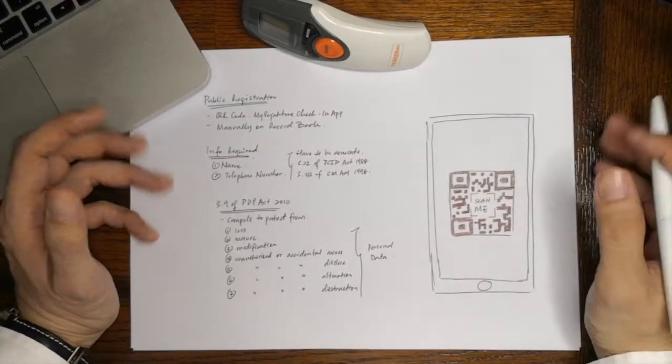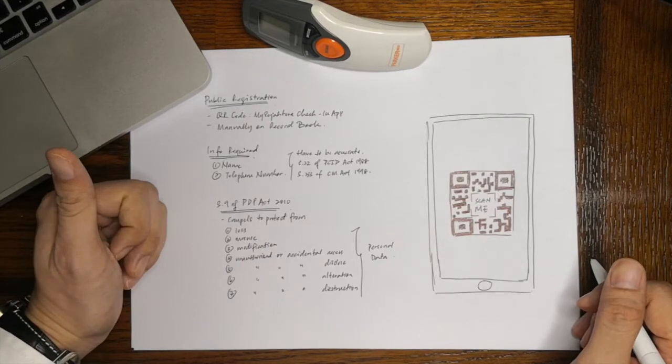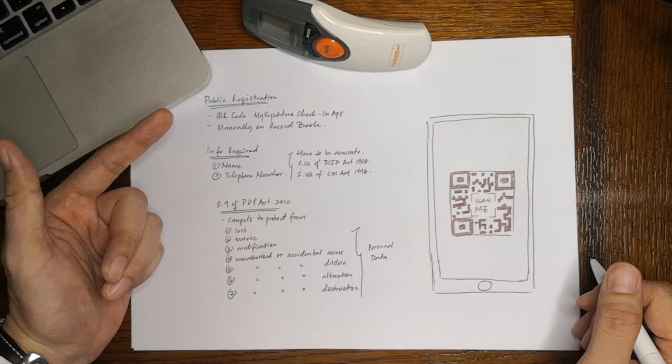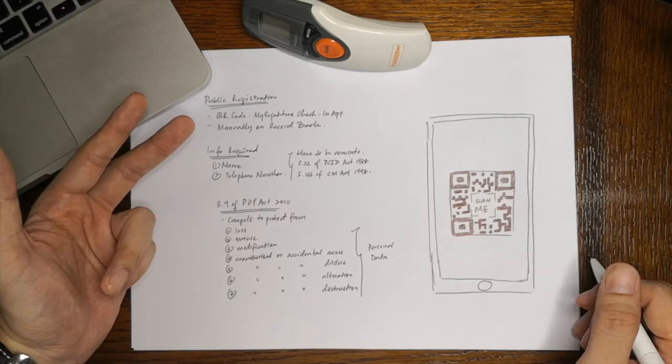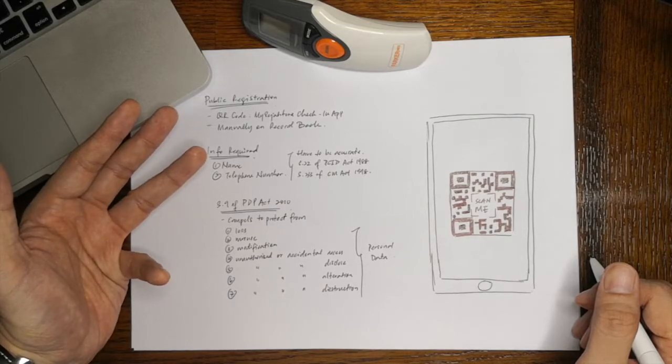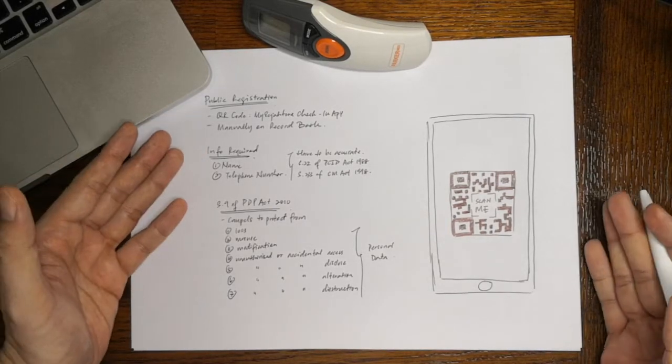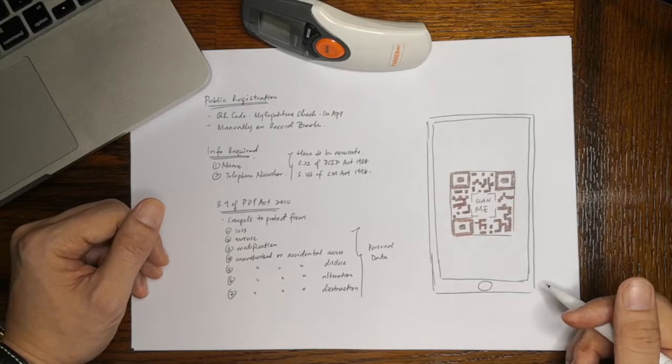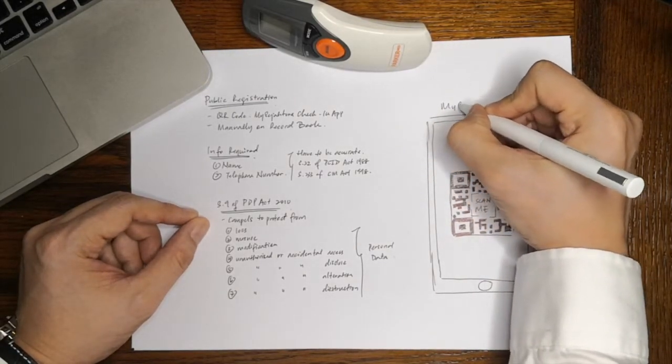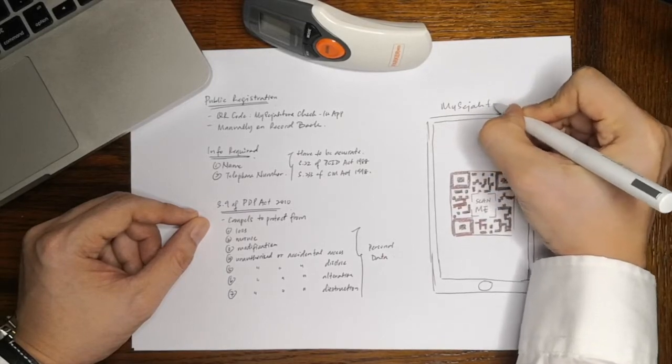To sum it up, public registration is compulsory. The only information you need to provide is your name and phone number. There are repercussions in providing false details and unwelcome consequences for business owners or employees who are found to have disseminated personal data. Lastly, now that you know how the MySejahtera check-in application works, shouldn't we all do our part and be responsible Malaysians?